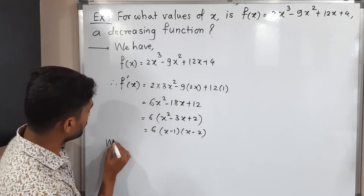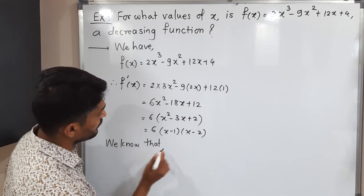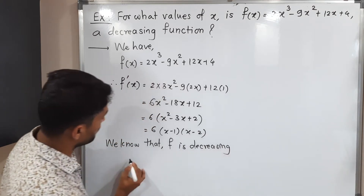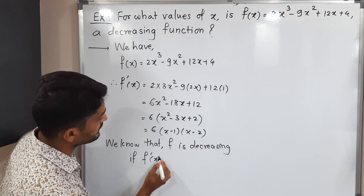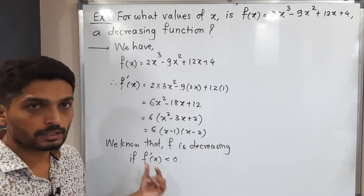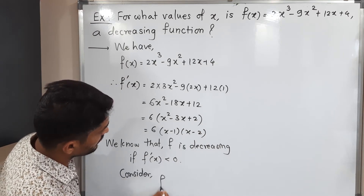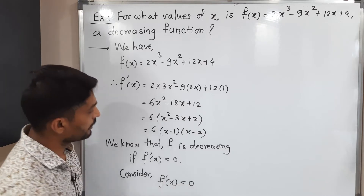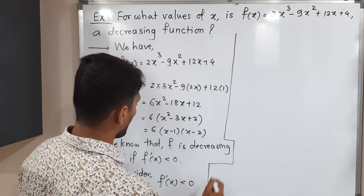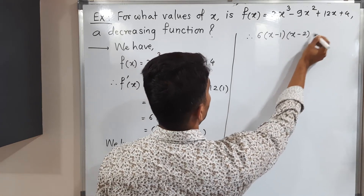We know that f is decreasing if f'(x) is less than 0. When we say the function is decreasing, its derivative must be negative. So let us apply this condition. We consider f'(x) < 0, and substituting the factored form we get: 6(x − 1)(x − 2) < 0.